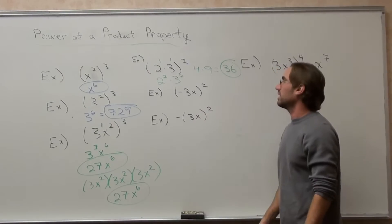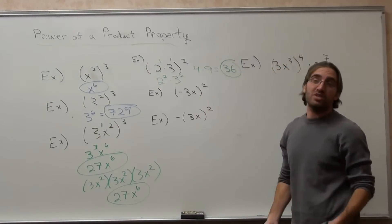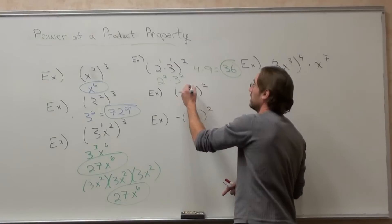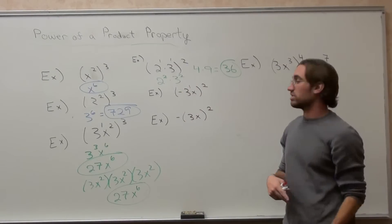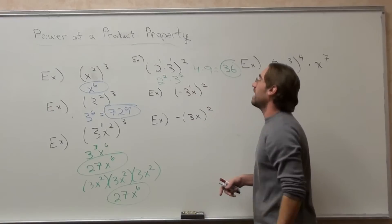These two are very interesting. What's the exponent on top of the negative 3, even though you don't see it? It's a 1. And what's the exponent on top of the x, even though you don't see it? It's a 1.